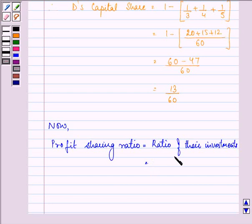So, the ratio given to us is 1 by 3 is to 1 by 4 is to 1 by 5 is to 13 by 60, which gives us 20 is to 15 is to 12 is to 13 as their profit sharing ratio.